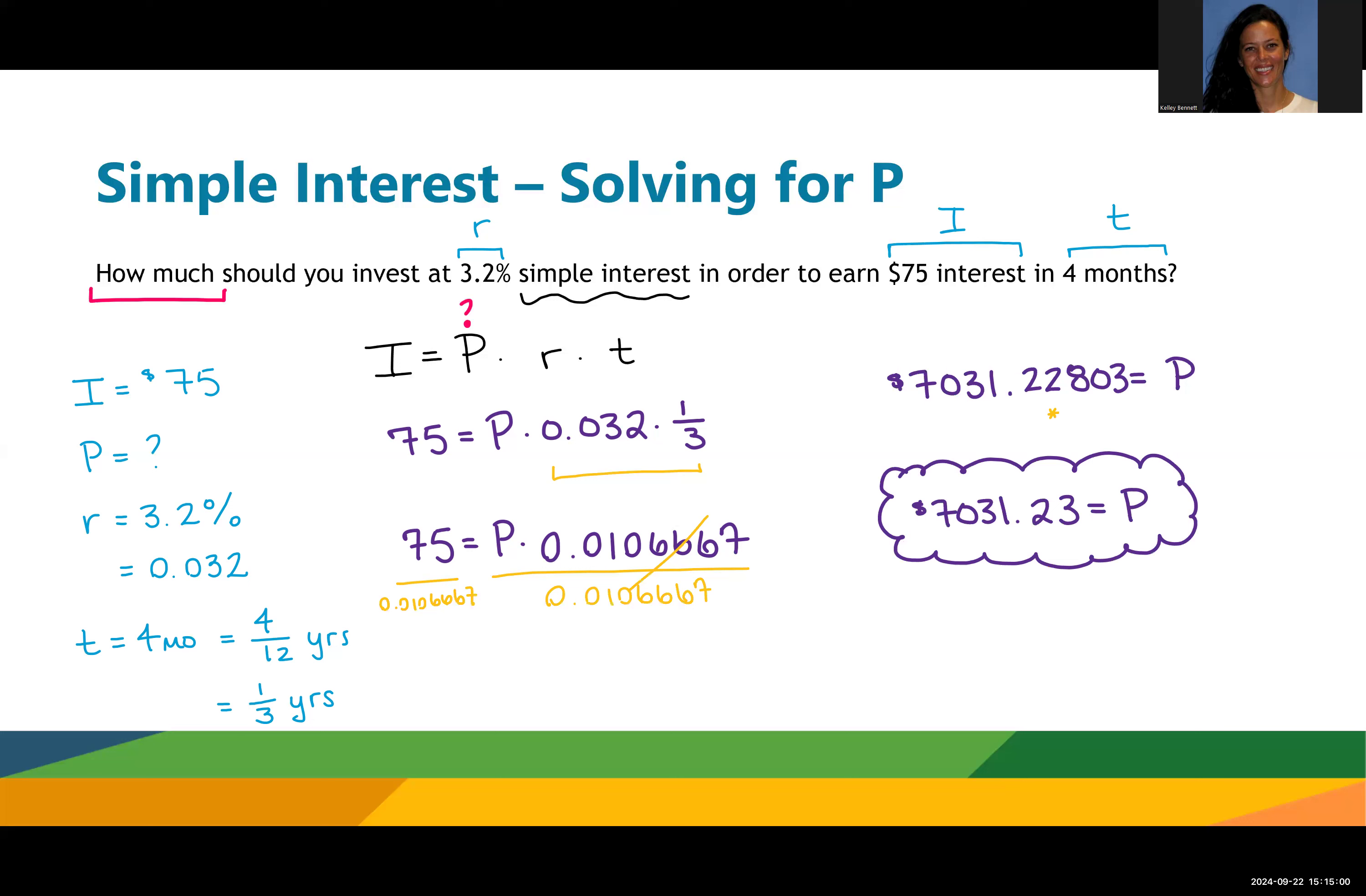That is the principle. That is how much we should invest in order to earn the $75 interest in four months with the given rate of 3.2%. Thank you.